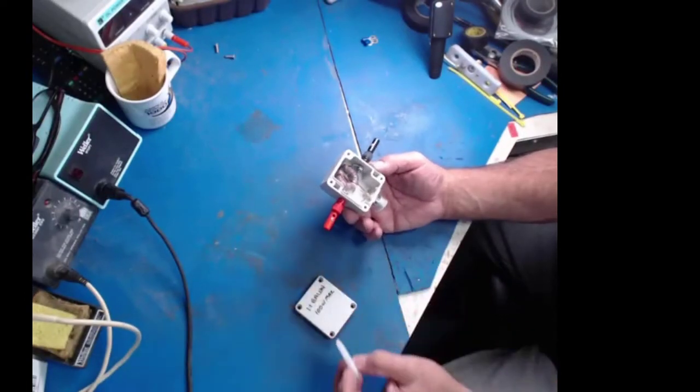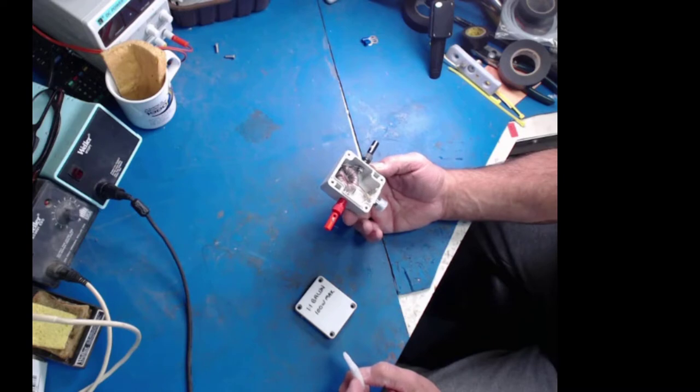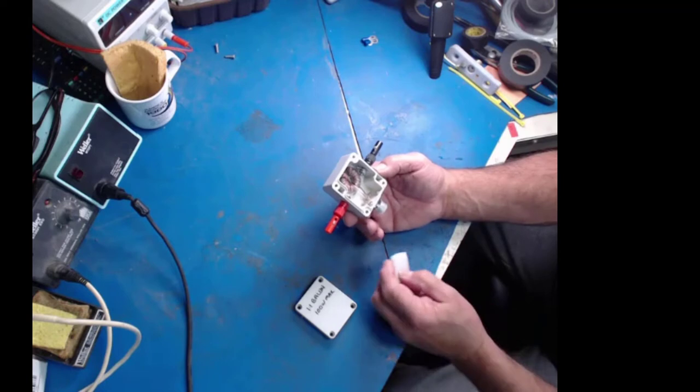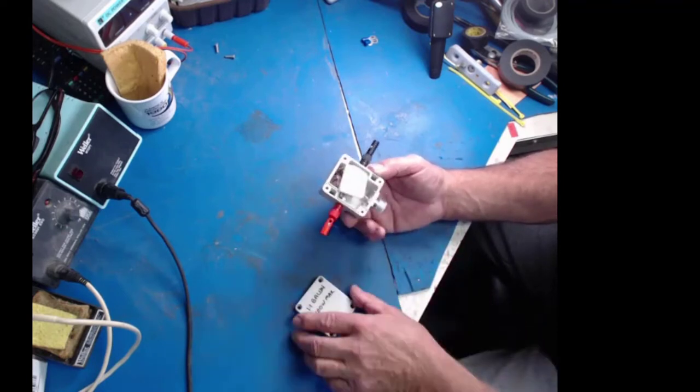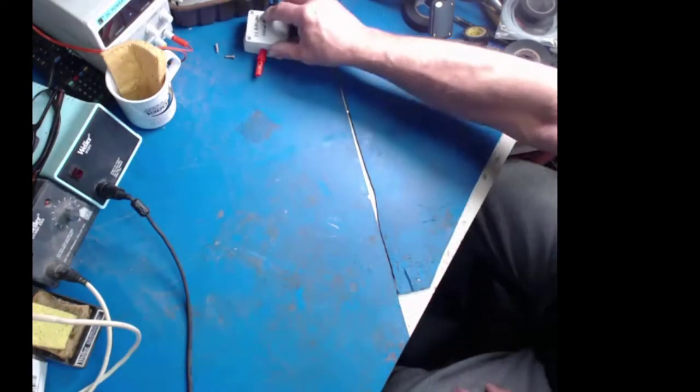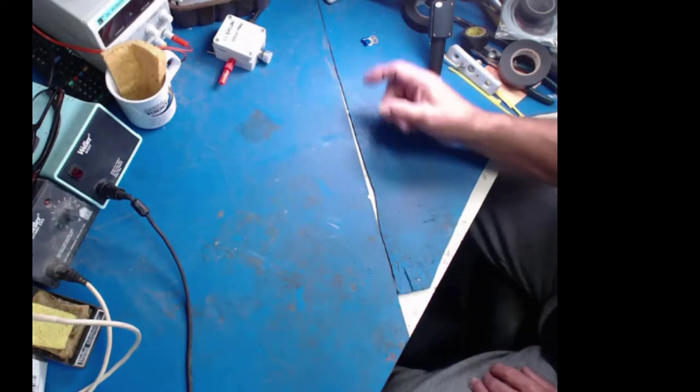This third one is another one that they claim will be 100 watt maximum, but I wanted to show everybody what was on the inside of this one. That is what a 1 to 1 balun looks like when it's completed and you can see the size is relatively small. I think it would probably be okay for QRP but not for really 100 watts.